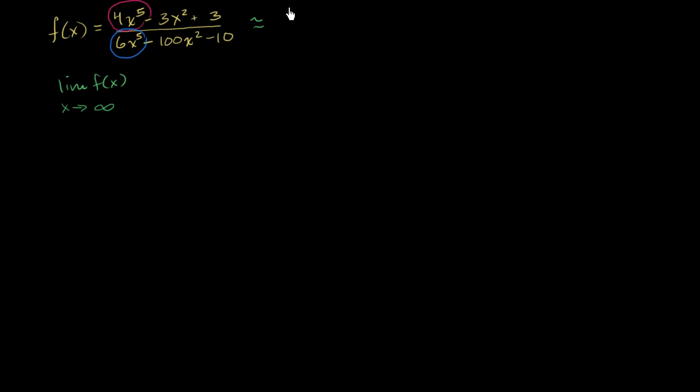As x gets very large, this thing is going to approximate 4x to the fifth over 6x to the fifth, or as x approaches infinity. Now what could this be simplified to? Well, you have x to the fifth divided by x to the fifth. These are going to grow together, so you can think of them as canceling out. And so you are left with 2 thirds.